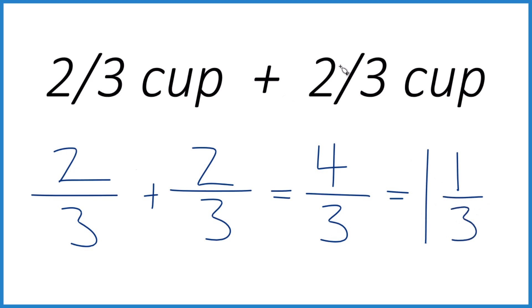So 2 thirds cup plus 2 thirds cup, that's 1 and 1 third cup, so you can measure out 1 and 1 third cups pretty easily. We can check this. 1 times 3 is 3 plus 1 is the 4 and we kept the 3 the same, so that's the correct way to do it.